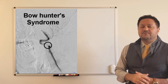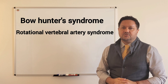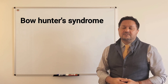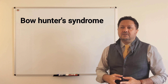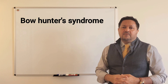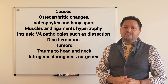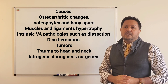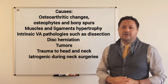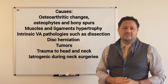Bowhunter syndrome is a rare cause of vertebral basilar insufficiency, also called rotational vertebral artery syndrome. It was first described by Dr. Sorensen in 1978. The cause is compression on one of the vertebral arteries, typically the dominant vertebral artery, by adjacent structures. Causes can include a bony spur or osteophyte, hypertrophy of adjacent muscles or ligaments, trauma, and intrinsic vessel pathologies such as dissections.